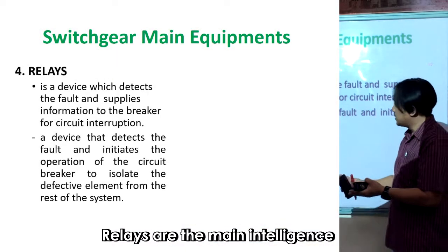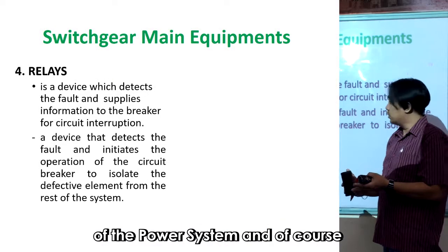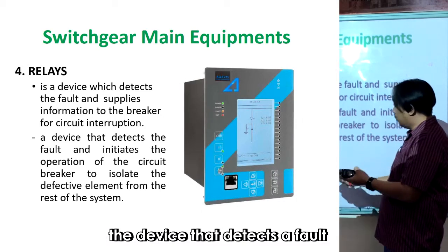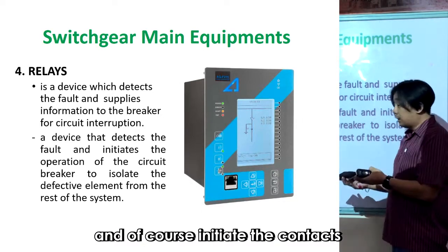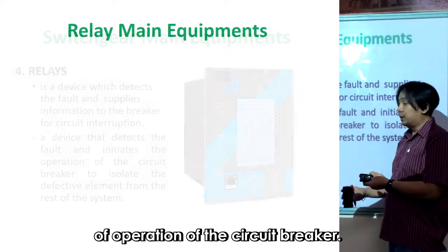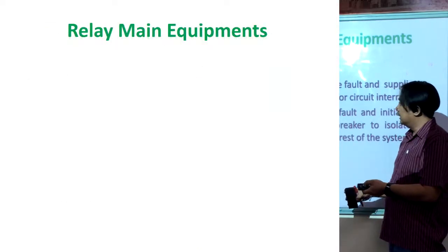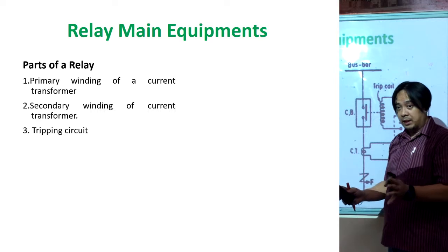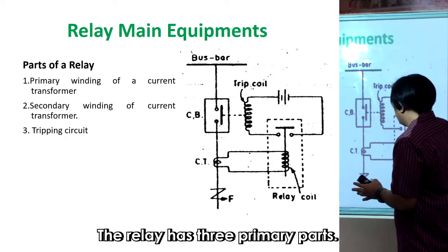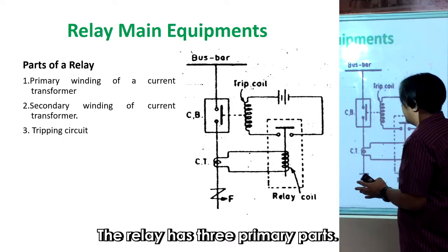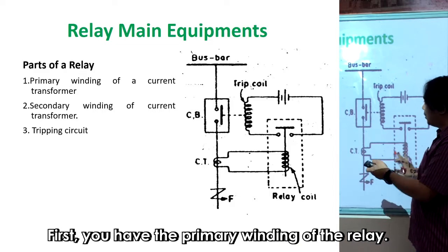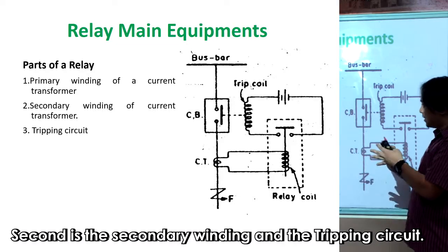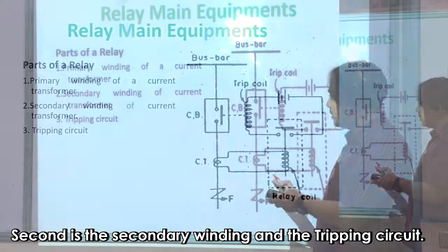Relays are the main intelligence of the power system — the device that detects the fault and initiates the contacts of operation. The relay has three primary parts: first, the primary winding of the relay; second, the secondary winding; and third, the tripping circuit. The primary winding connects to the current transformer (CT).